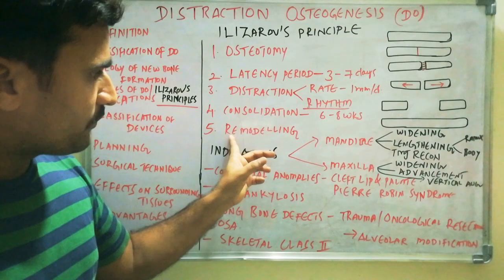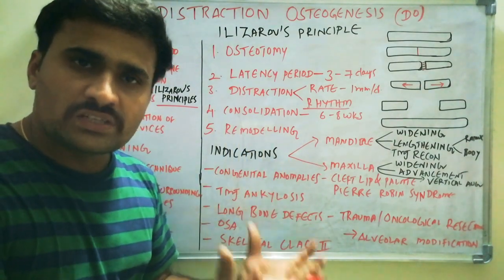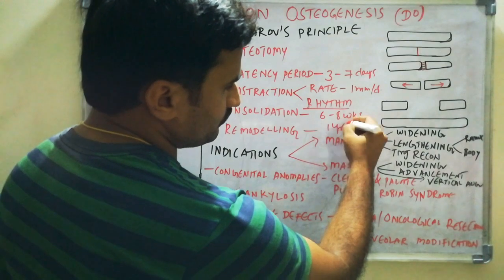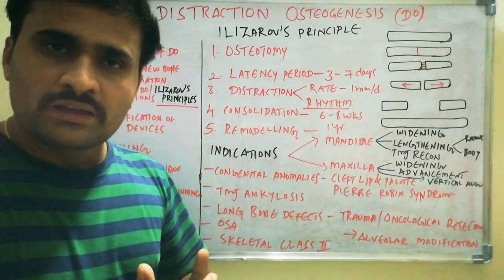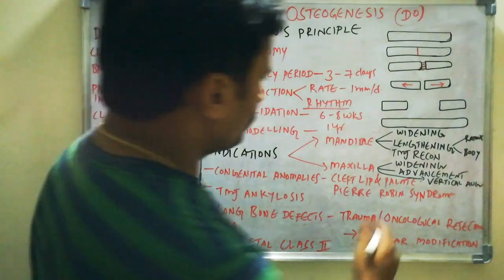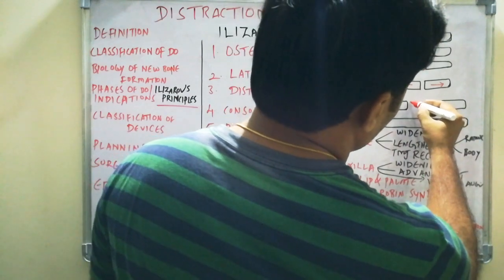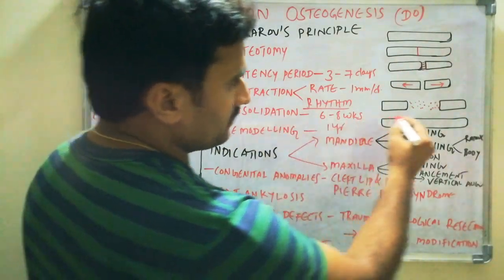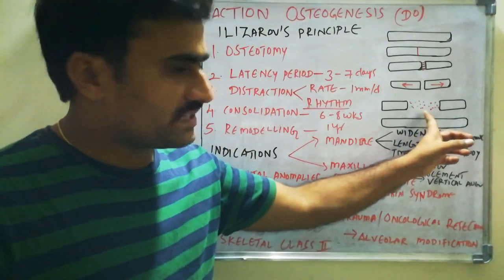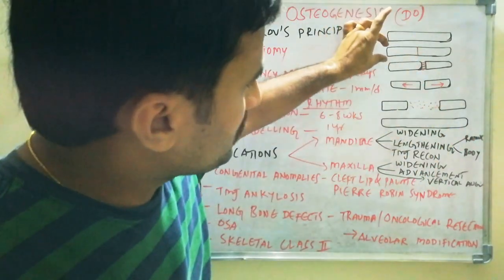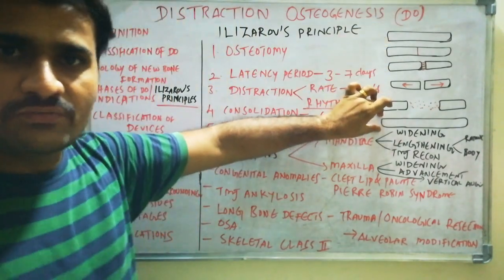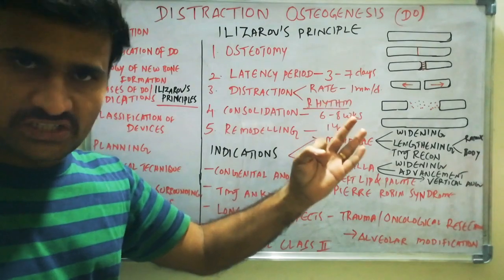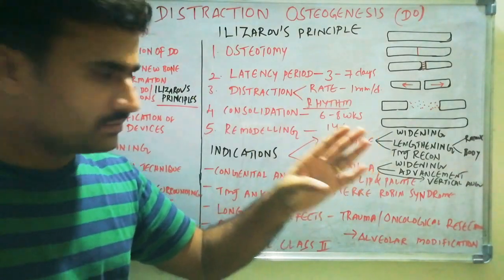The fifth phase is remodeling — from taking functional load to complete remodeling of the bone, which can occur up to 1 year (12 months). During consolidation, new bone forms in the distracted area; during remodeling, there is complete union between the distracted area and normal bone. So the bone goes from its initial length to an increased length. These are the five principles: osteotomy, latency period, distraction (rate and rhythm), consolidation, and remodeling.